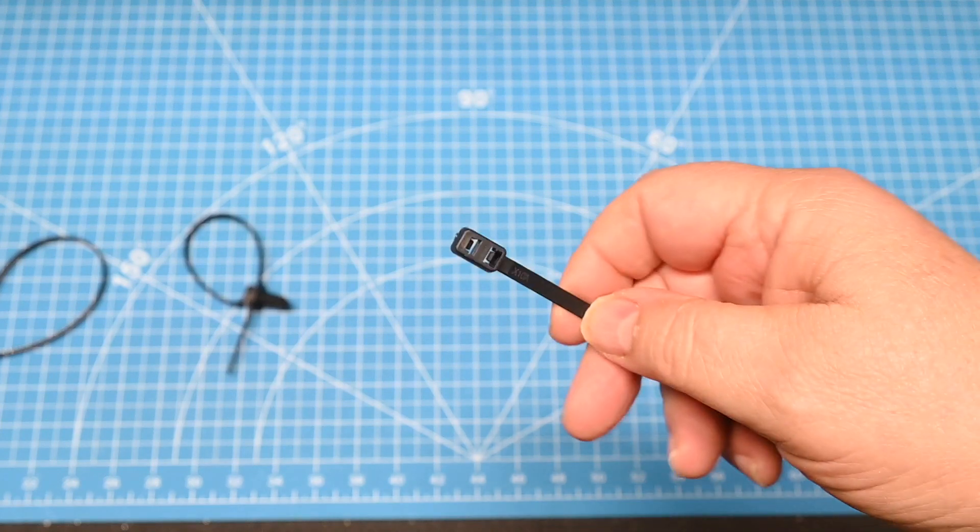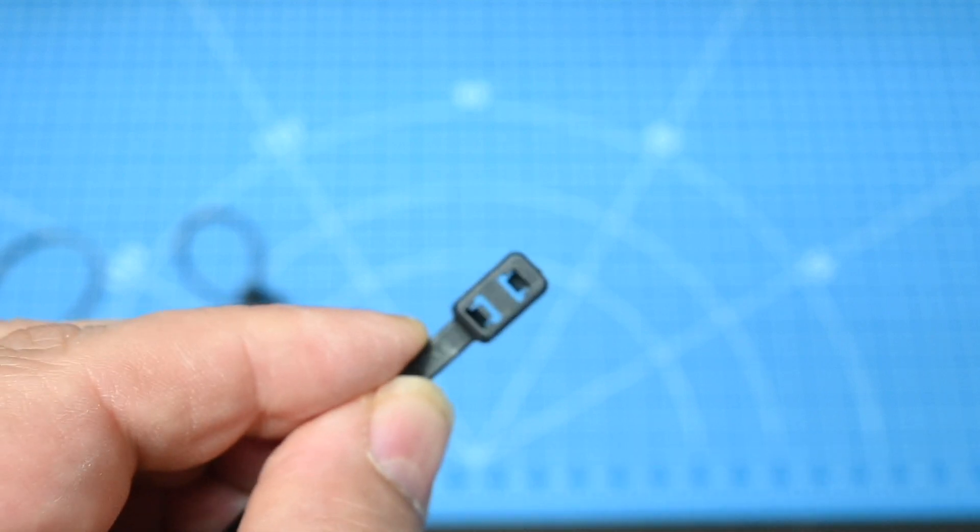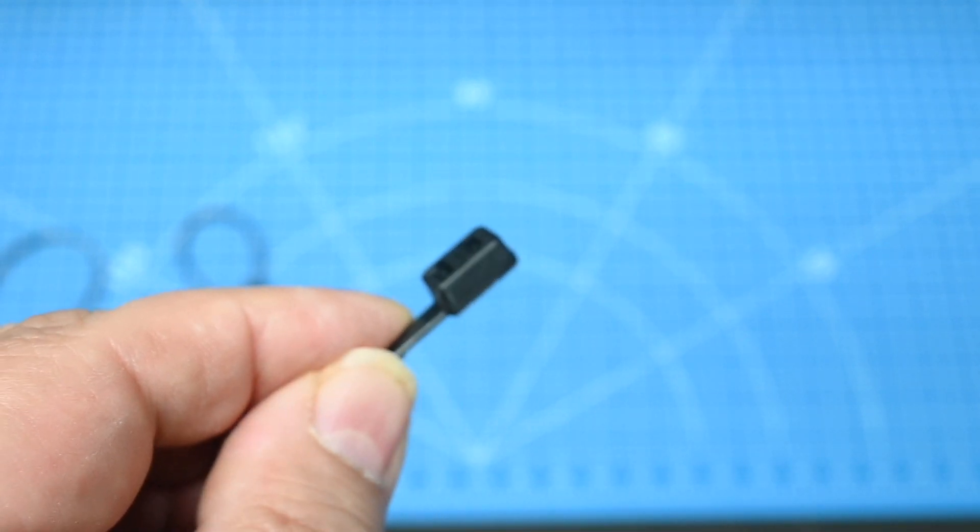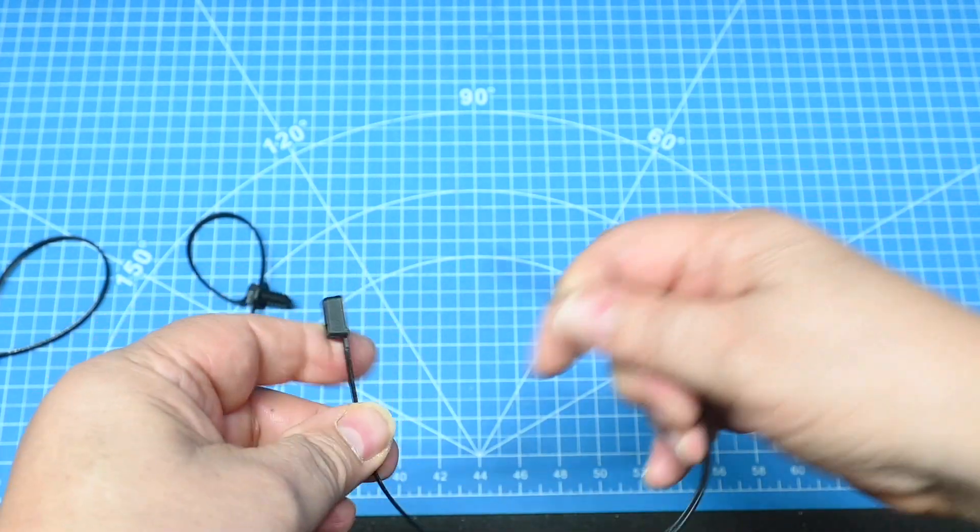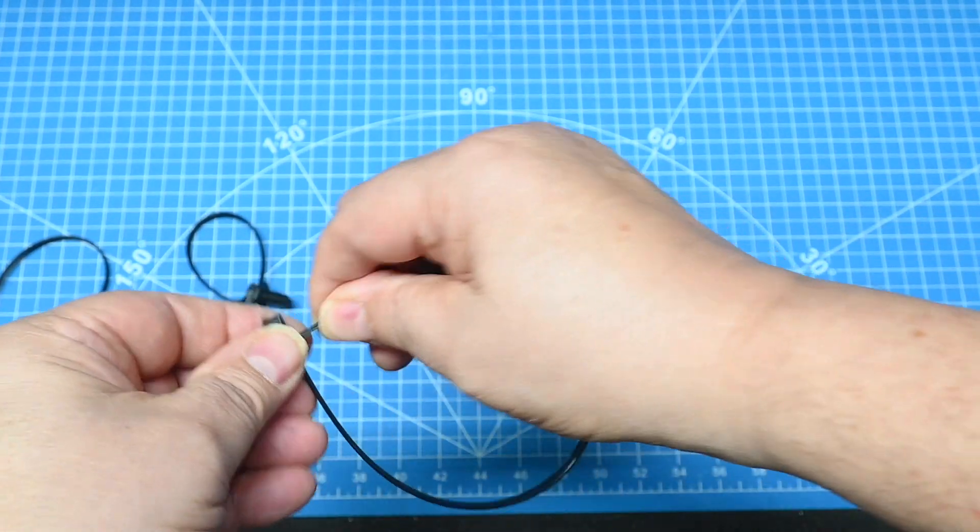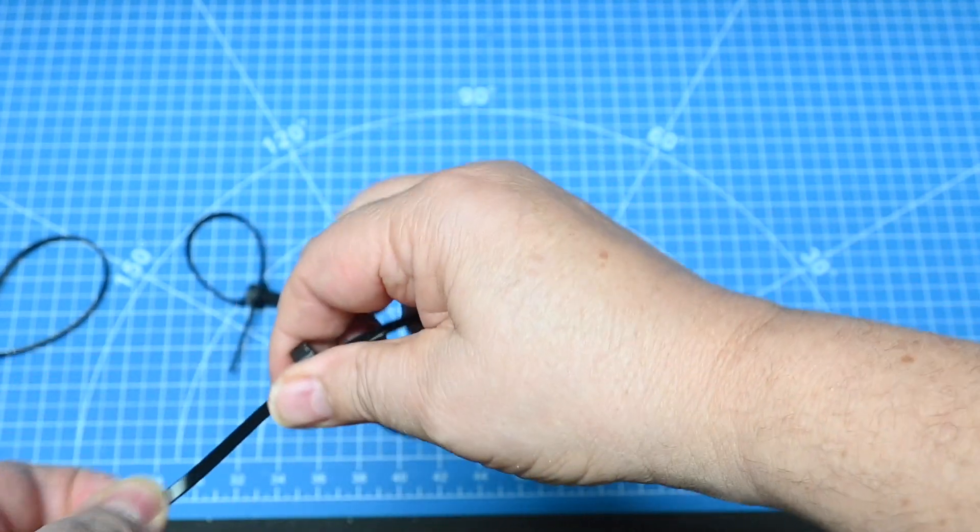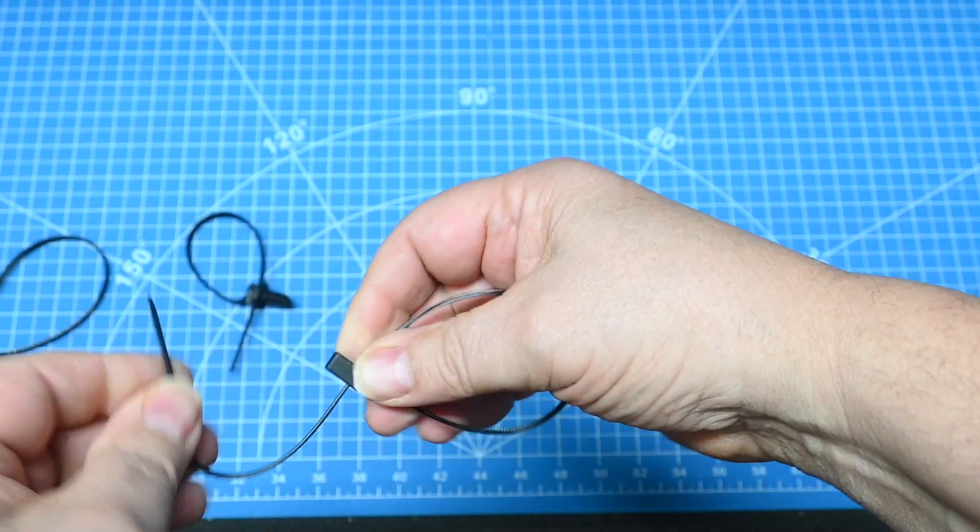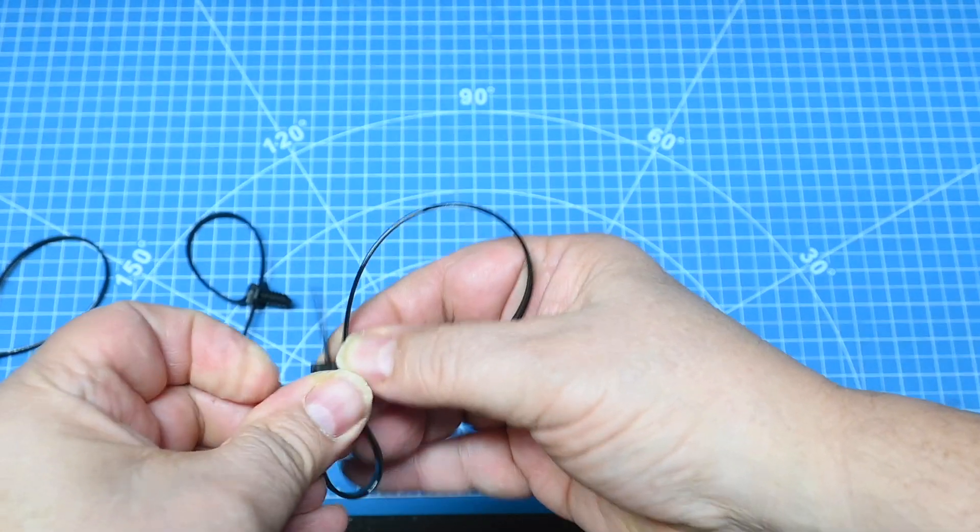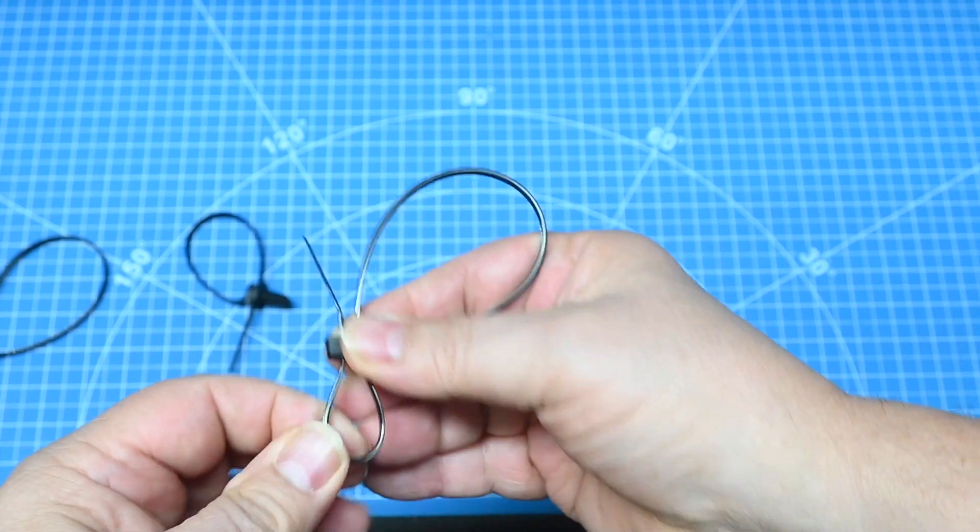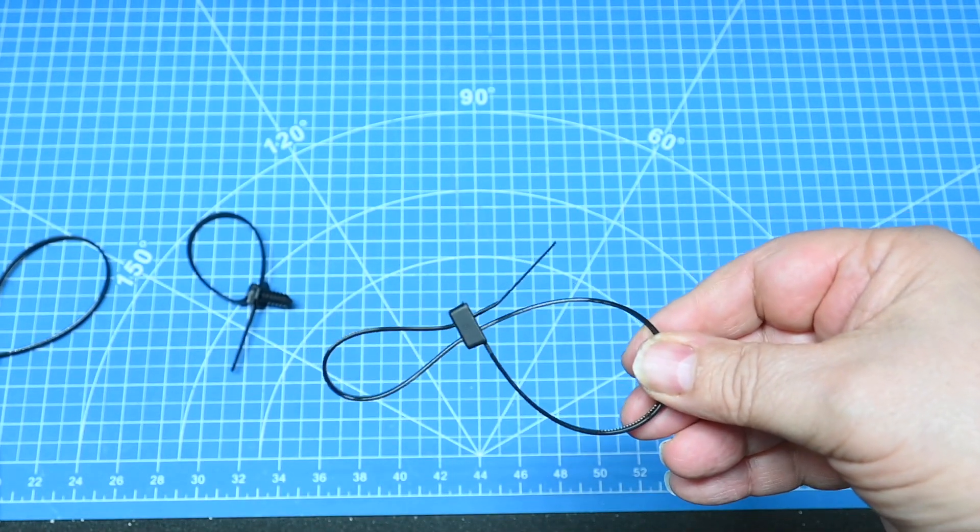The third type of cable tie is one that has a double head. We'll show you a close-up of it. It's just a cable tie with two heads in it. This is designed so that you can put your wires through here. Then let's say you have a water pipe or another set of cables or whatever, you can fasten it again to another device.